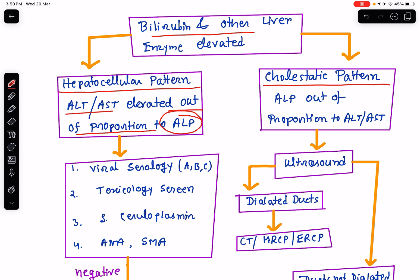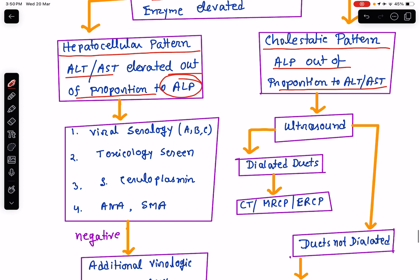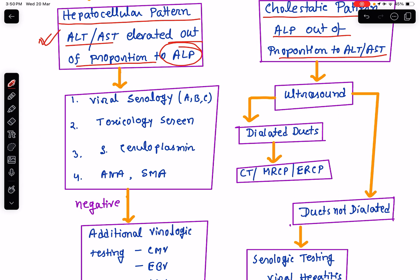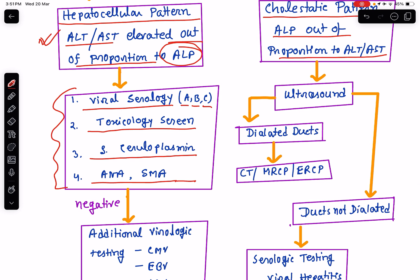The cholestatic pattern is just the opposite — alkaline phosphatase is raised out of proportion to alanine aminotransferase and aspartate aminotransferase. If we find that there is a hepatocellular pattern of involvement, then we should evaluate for viral hepatitis: viral serology for hepatitis A, hepatitis B, and hepatitis C virus. Toxicology screening should be done — for example, acetaminophen level should be checked. Serum ceruloplasmin level should be checked if the patient is less than 40 years. For autoimmune hepatitis, look for ANA and SMA.